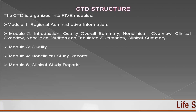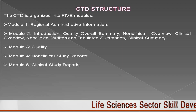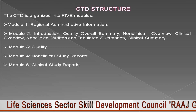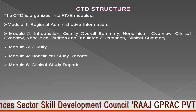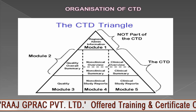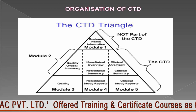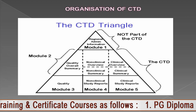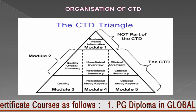The CTD structure is always divided into five modules. Module 1 covers administrative data and prescribing information. Module 2 covers the quality overall summary of Modules 3, 4, and 5. Module 3 is quality — that is CMC (chemistry, manufacturing, and control). Module 4 covers non-clinical data and Module 5 covers clinical data. Module 1 is not part of the CTD triangle because of regional differences — whenever we compile a dossier and submit to a specific country, we must meet that country's specific requirements.